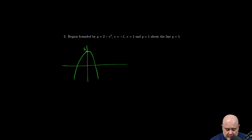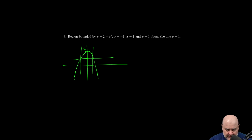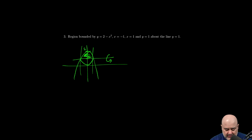We have x equals negative 1 here, x equals 1 here, and y equals 1. If this is 2, then 1 is down here. So this is the region we're looking at, and we're spinning it about the line y equals 1 — so it's going to be that football-shaped thing again.